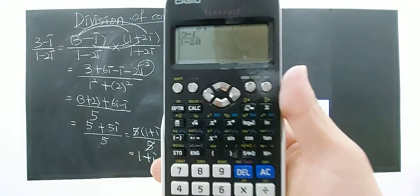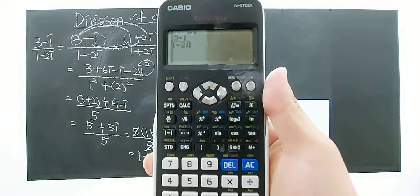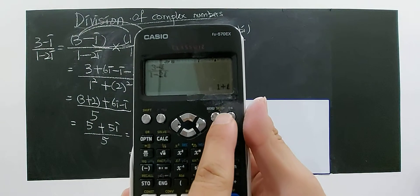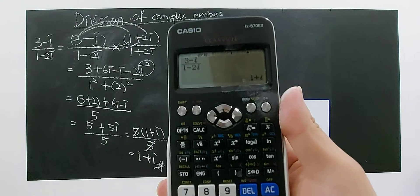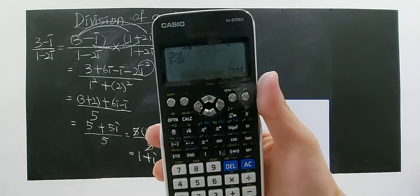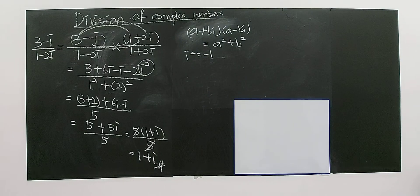So 3 minus i, 1 minus 2i. You're just pressing the button equal, then you will get 1 plus i. Can you see? That's your answer. You can use calculator to help you check your final answer.